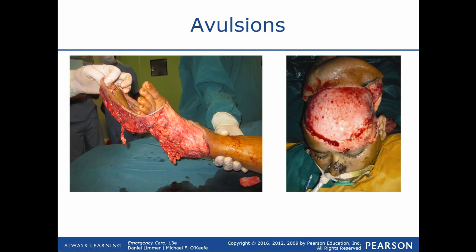An avulsion is where the skin itself is pulled back or scraped away. You can have an avulsion of the scalp, or on the hand we call it degloving. Causes include getting caught in machinery or going through a windshield. In these situations, we simply place the skin back where it belongs, wrap it, control any bleeding, and transport. Both of these patients are going to need plastic surgery and surgical interventions, so these are probably candidates for a level one trauma center.